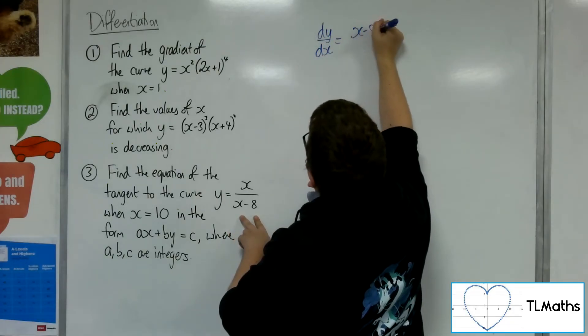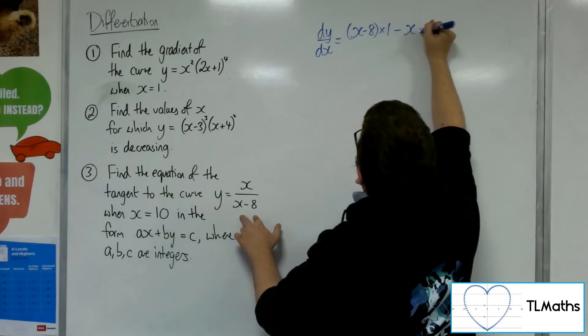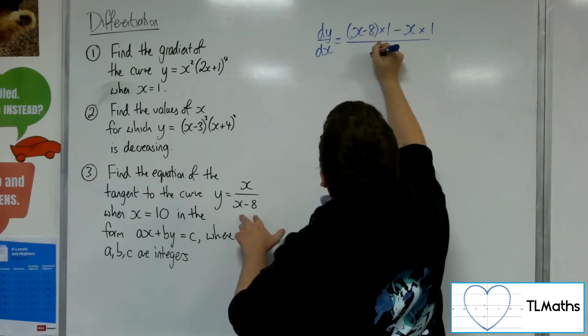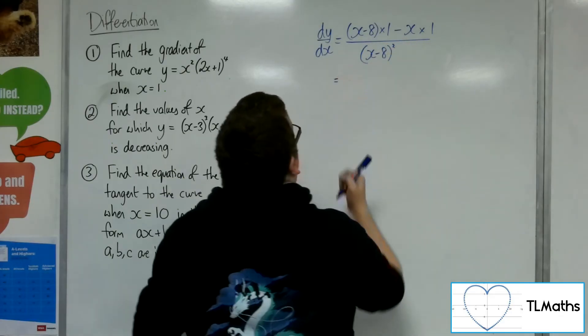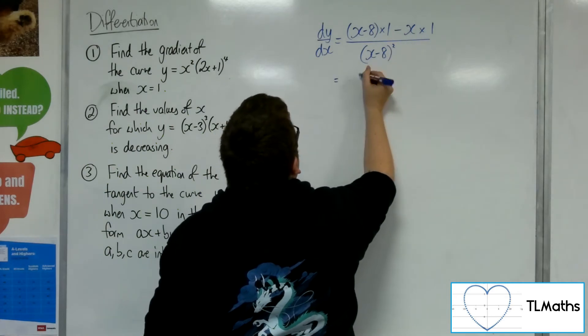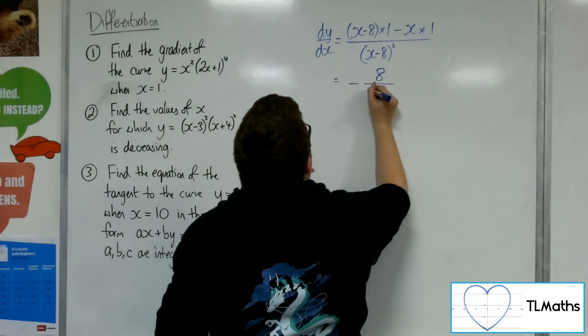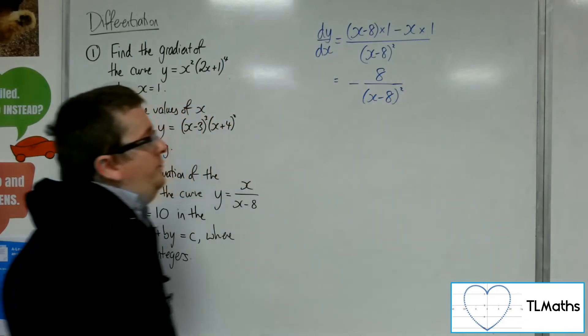So we have the bottom times the derivative of the top, take away the top times the derivative of the bottom, over the bottom squared. So we've got x minus 8, take away x. So that's just going to leave you with minus 8 over x minus 8 squared.